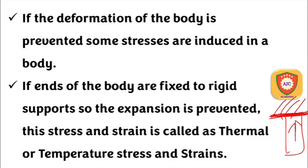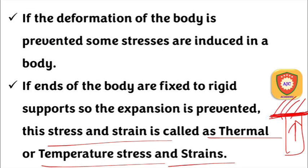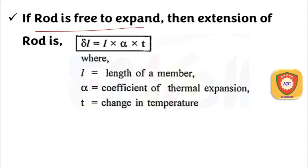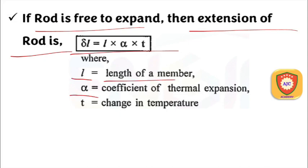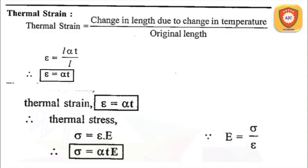This is what we call thermal stress and thermal strain. For a free rod that expands, δL = L · α · T, where L is the length of the member, alpha is the coefficient of thermal expansion, and T is the change in temperature.